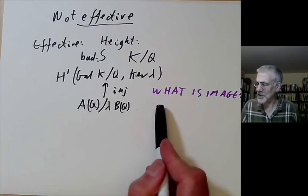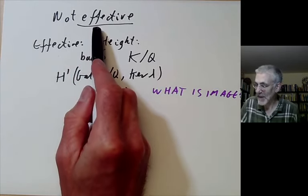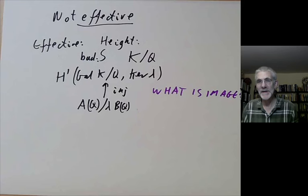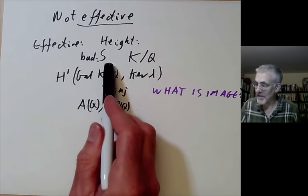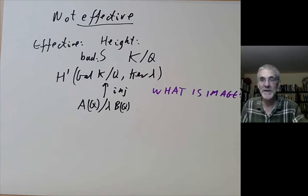So the Tate-Shafarevich group is, at the moment, the problem to making this effective. I should say, in practice, we can always effectively find the group of points of finite order on an elliptic curve. We're just not certain that this algorithm always works.